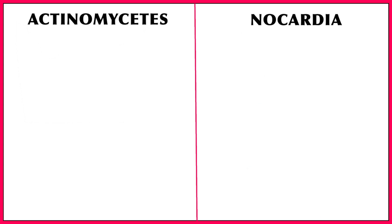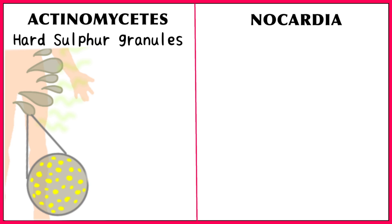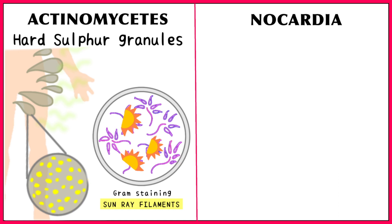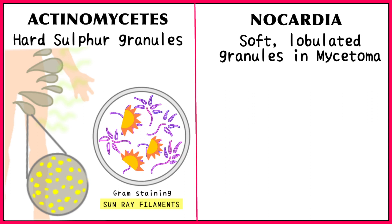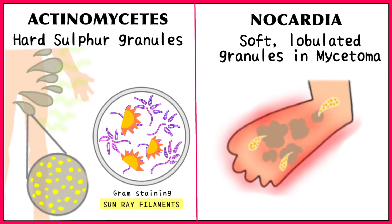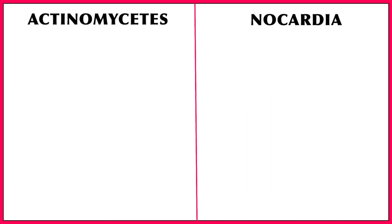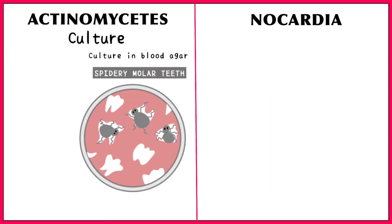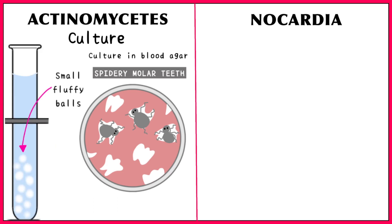Actinomyces infection causes accumulation of pus, which has hard yellow sulphur granules that take on a sun ray appearance on gram staining. Actinomyces shows spidery molar teeth appearance when cultured on blood agar and small fluffy balls below the surface of liquid media.